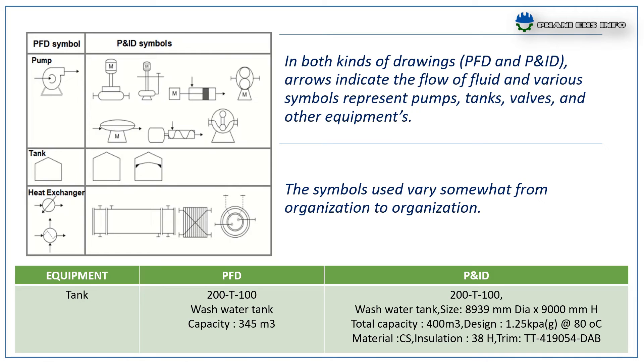This table is one of the example to compare PFD and P&ID. Here the equipment is tank. So here we see the tank identification number, wash water tank, capacity. These are the things available in PFD. And in P&ID with these details, the size, total capacity, design, material of construction, and other details are also available in P&ID.